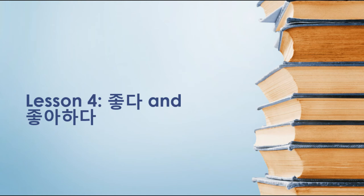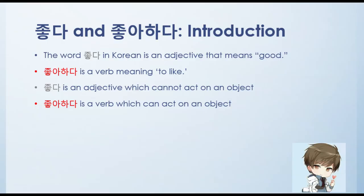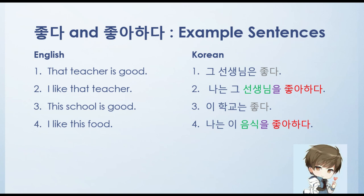Lesson 4 is chotda and jowahada. The word chotda in Korean is an adjective meaning good. Jowahada is a verb meaning to like. Chotda is an adjective and cannot act on an object, while jowahada is a verb which can act on an object. Example sentences: 'That teacher is good' — ku sonsing nimun, chotda. 'I like that teacher' — nanen, ku sonsing nimul, jowahada. 'This school is good' — i hakyo nun, chotda. 'I like this food' — nanen, i umshigul, jowahada. Remember: when using jowahada, you need an object; when using chotda, there should be no object.